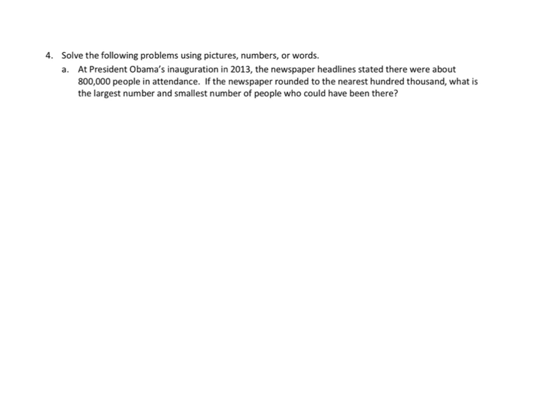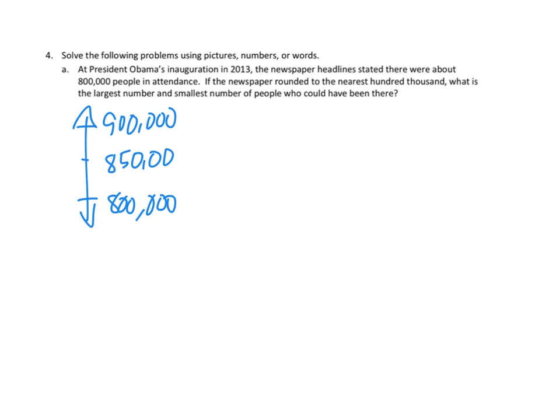Let's think about the first part: what is the largest number we could have had? The largest number means there were actually a bigger number, but we rounded down to 800,000. I'm going to draw a little number line. What is 100,000 more than 800,000? That would be 900,000. And the midpoint between those two would be 800,000 plus 50,000 of the next place value, or 850,000.